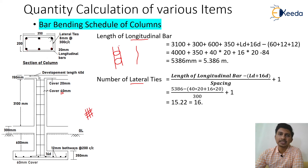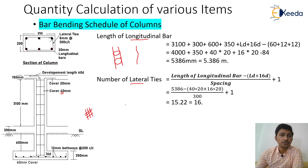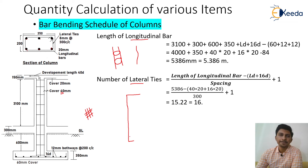To calculate the length of the longitudinal bars, the bar has a development length going into the slab, a total vertical length, and a horizontal L-shape at the bottom for merging into the foundation. This horizontal L length is 16d (a standard value), and the development length is 40d to 50d — we have considered 40d for our calculation.